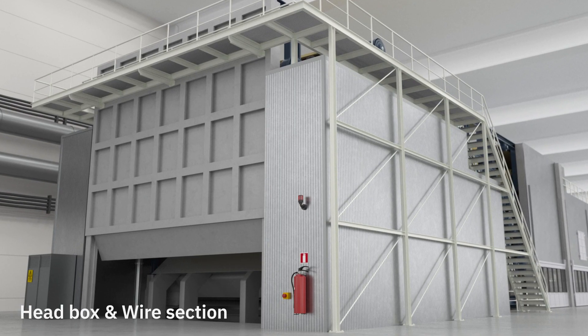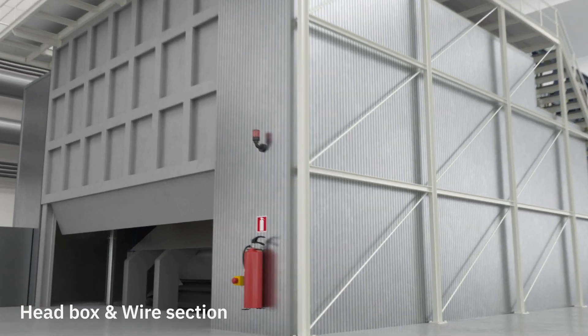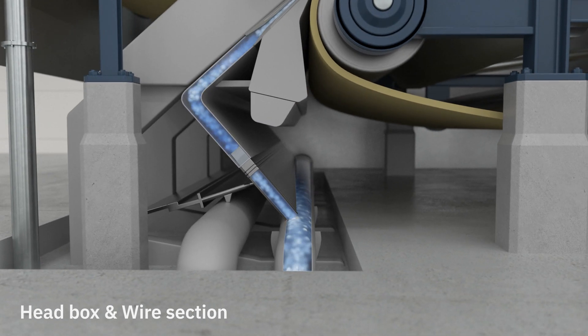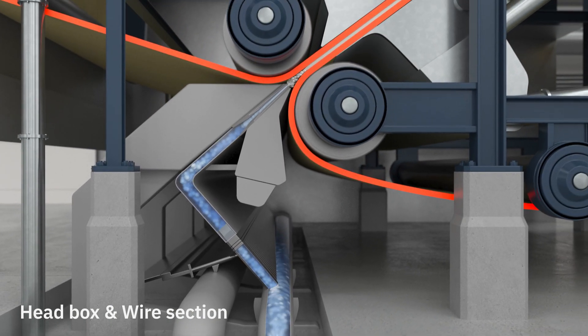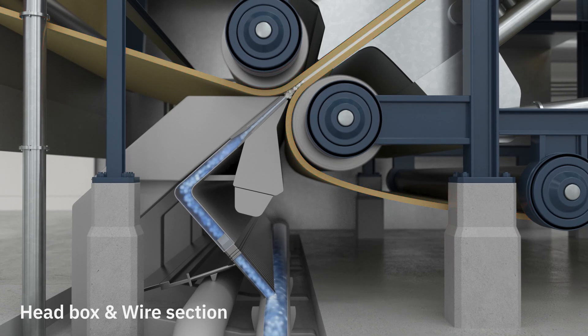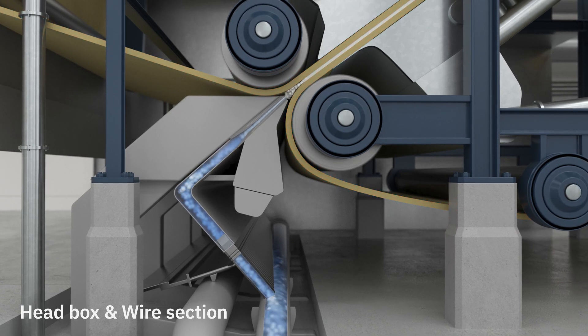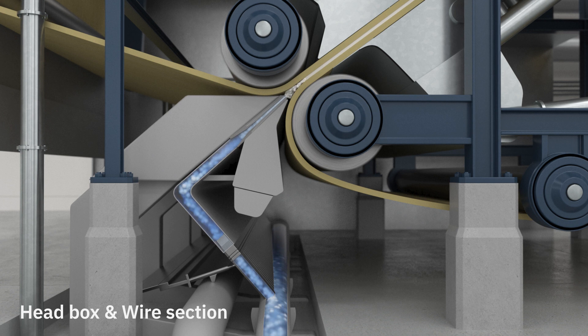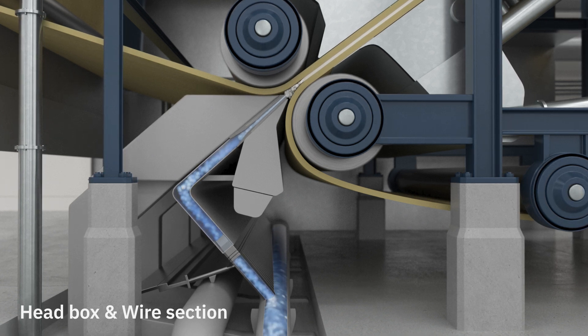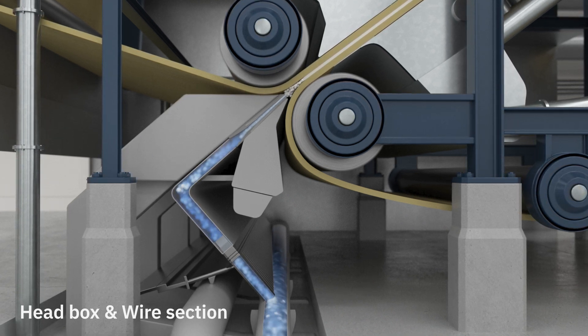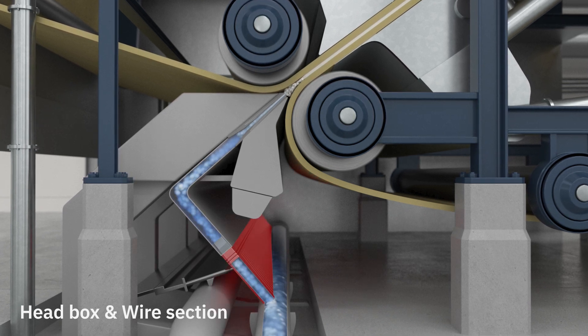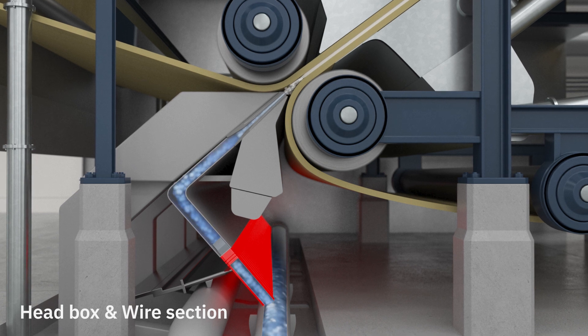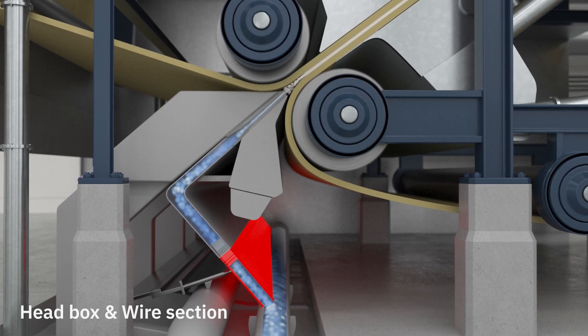When the pulp reaches the headbox, it consists of 1% fibers and 99% water. The pulp is pumped in between two forming fabrics, which are woven in a special pattern from thin polyester threads. All this is done at a speed of 100 km an hour, which equals 2,000 liters a second. The headbox contains 130 jets to ensure that the pulp is spread evenly over the forming fabrics.